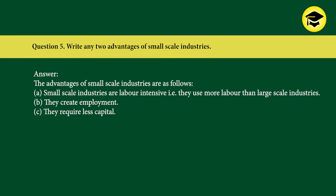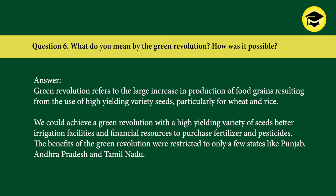Question 5: Write any two advantages of small-scale industries. Answer: The advantages of small-scale industries are as follows — A) Small-scale industries are labor-intensive, i.e., they use more labor than large-scale industries. B) They create employment. C) They require less capital.